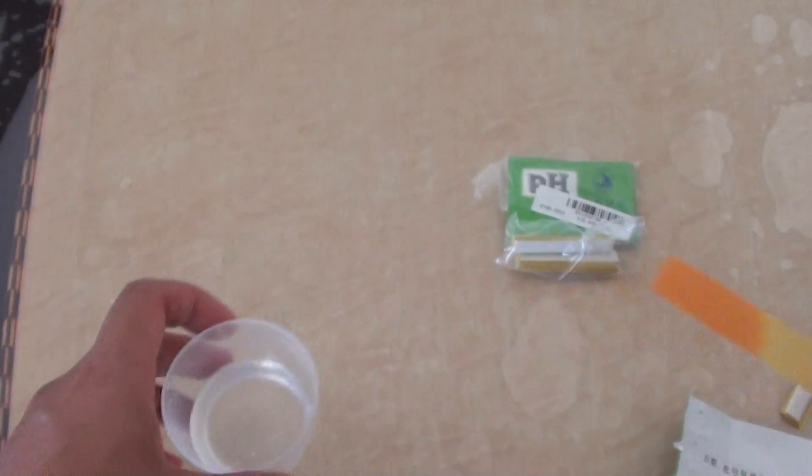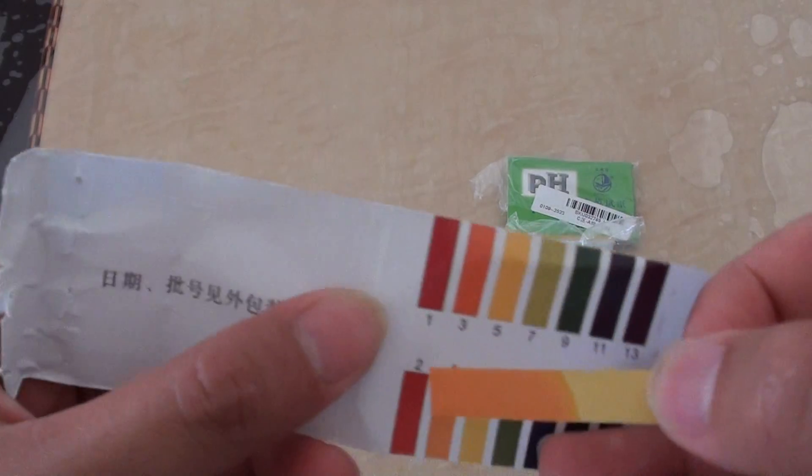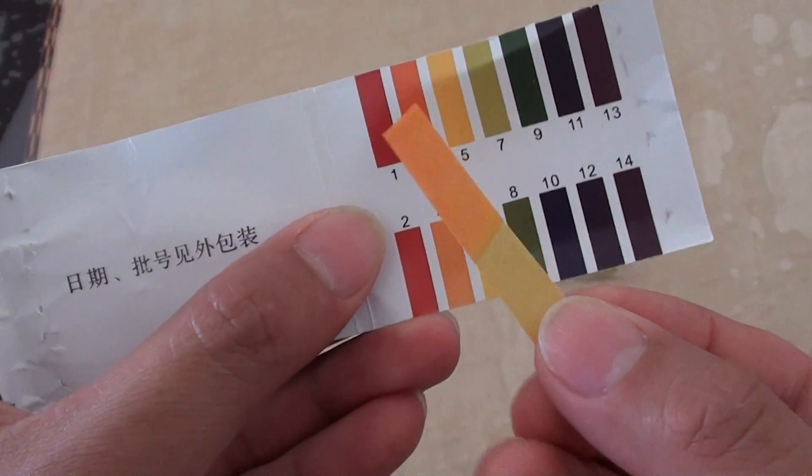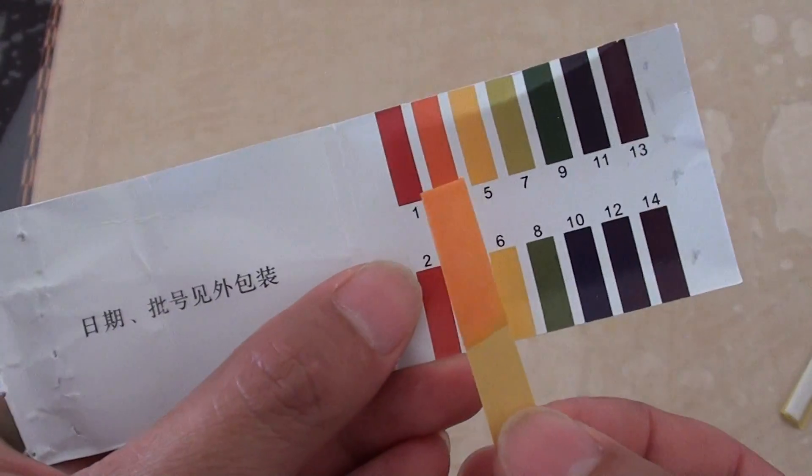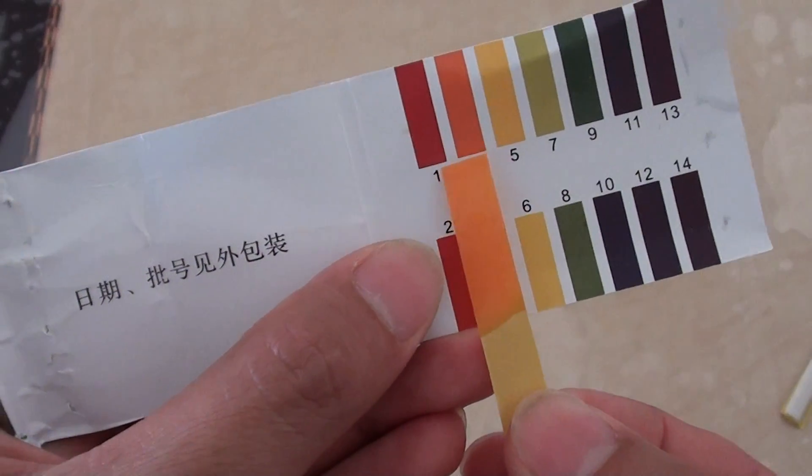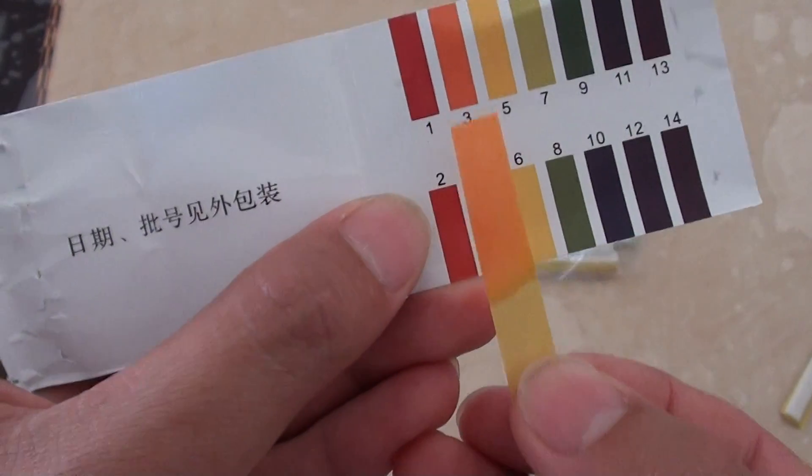And you can, using this piece of paper, match it against the color chart. And this should be able to tell you where your pH level is.